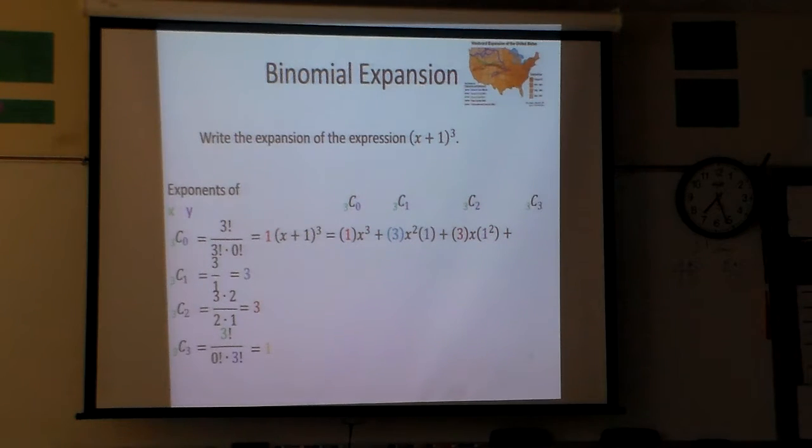And then on the last one we're going to have this one because that's the coefficient. There's no x's, and so then we have the last term one cubed. And if I multiply those out we end up with x cubed plus three x squared plus three x plus one.